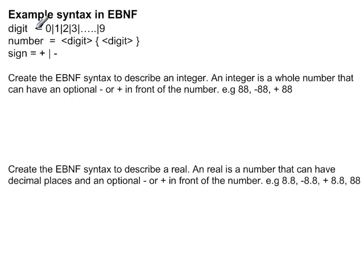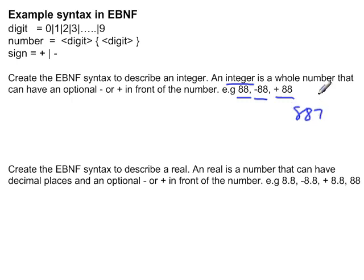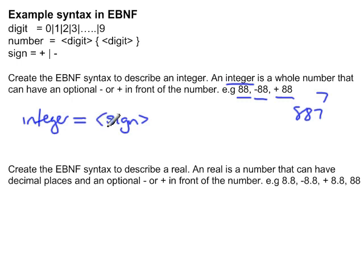Now we want to define, using what we have already defined — digit, number, and sign — what an integer is. An integer is a whole number, such as 88 or 887, or just 7, which is any sequence of digits. It can also contain an optional negative or positive sign at the front. So an integer is defined to have a possible sign at the front, written using angle brackets since it has been previously defined, and wrapped in square brackets to make the sign optional.